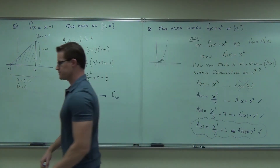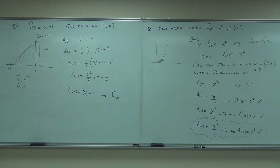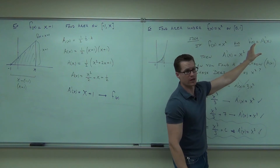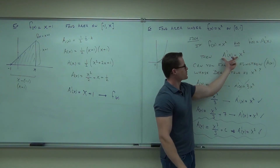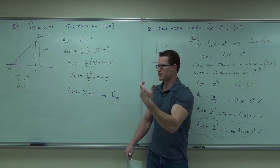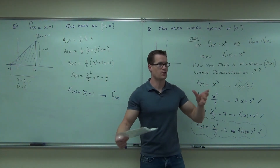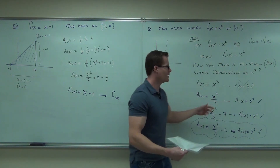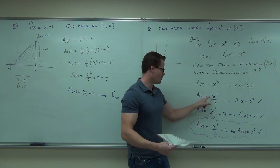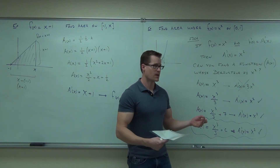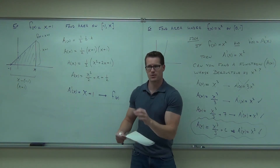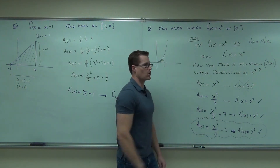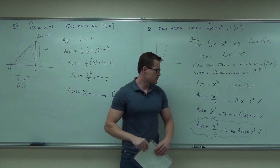Each of those curves would work as an area function. We started with a function, recognized it's the first derivative of an area function, set that derivative equal to it, and undid it — that's why we call it the anti-derivative method. 'Anti' means opposite of derivative, so you're undoing a derivative. We have an infinite number of possibilities, so in general you must write plus C. The plus C represents a family of curves, each of which could be the area function.